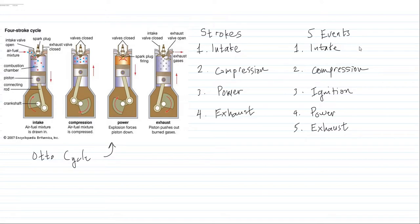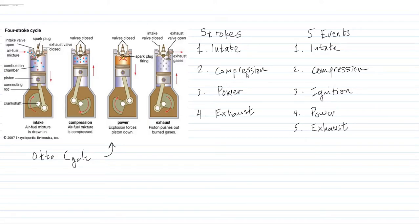That is the intake stroke, where the fuel and air mixture goes inside the combustion chamber. The next stroke is the compression stroke, where the piston goes up to the top dead center and compresses the fuel and air mixture. During this compression event, both the exhaust valve and the intake valve are closed.